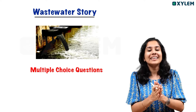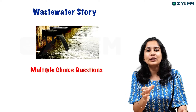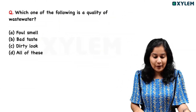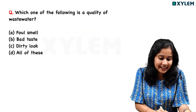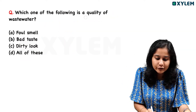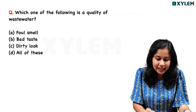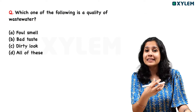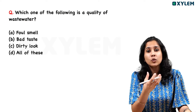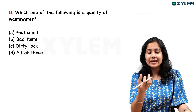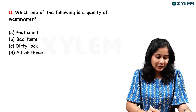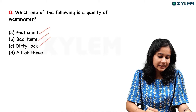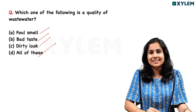So we are going to go to the first question: which one of the following is the quality of wastewater? In this chapter, there are characteristics of wastewater — foul smell, bad taste, dirty look, all of these.